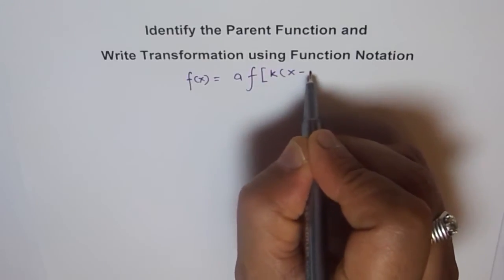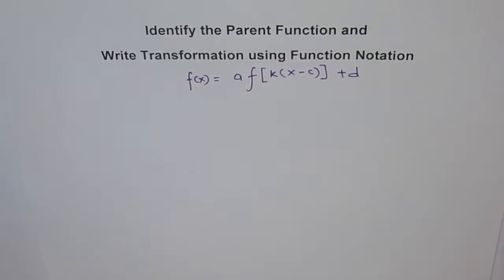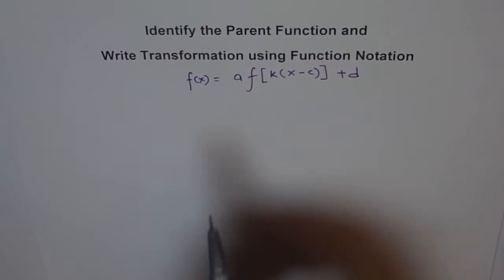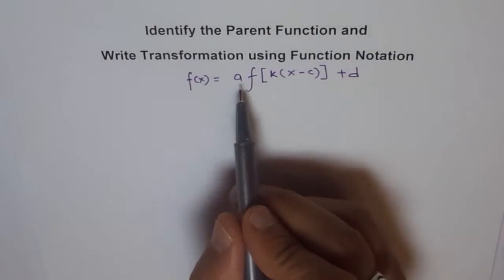x minus c, bracket close, plus d. So that's how we write our transformed function, right? This is how we write transform function, and we say a is a vertical stretch and k is a horizontal compression, assuming all the values to be greater than one.